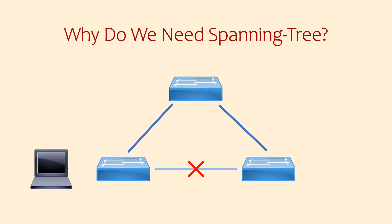The secondary part of spanning tree is to respond if there are problems or changes in the network. A link failure in this topology would leave one switch isolated, with no way of reaching the rest of the network. So spanning tree will detect this change and adapt by enabling the link that it originally blocked.